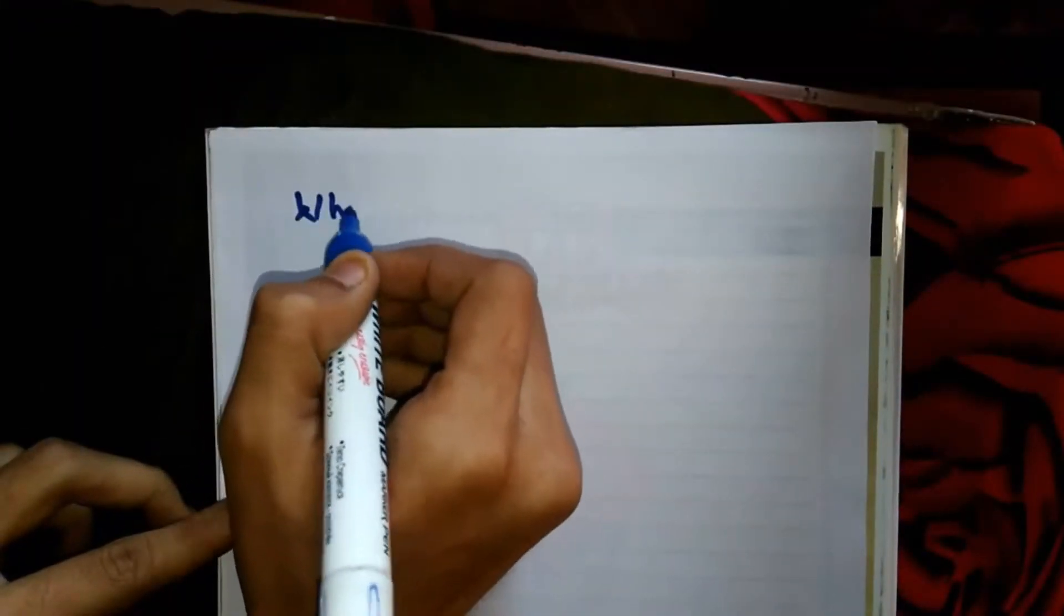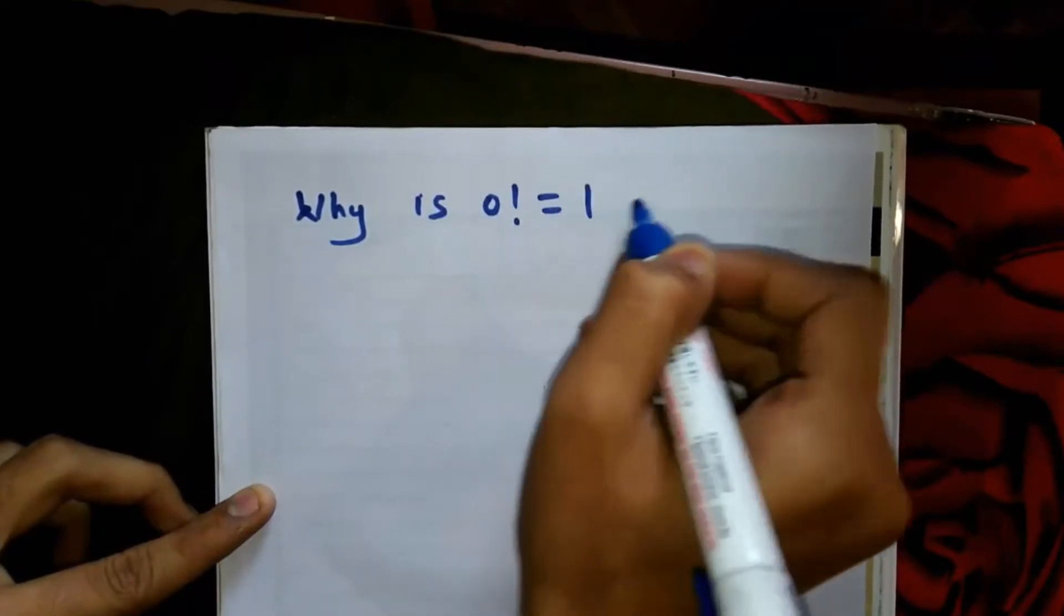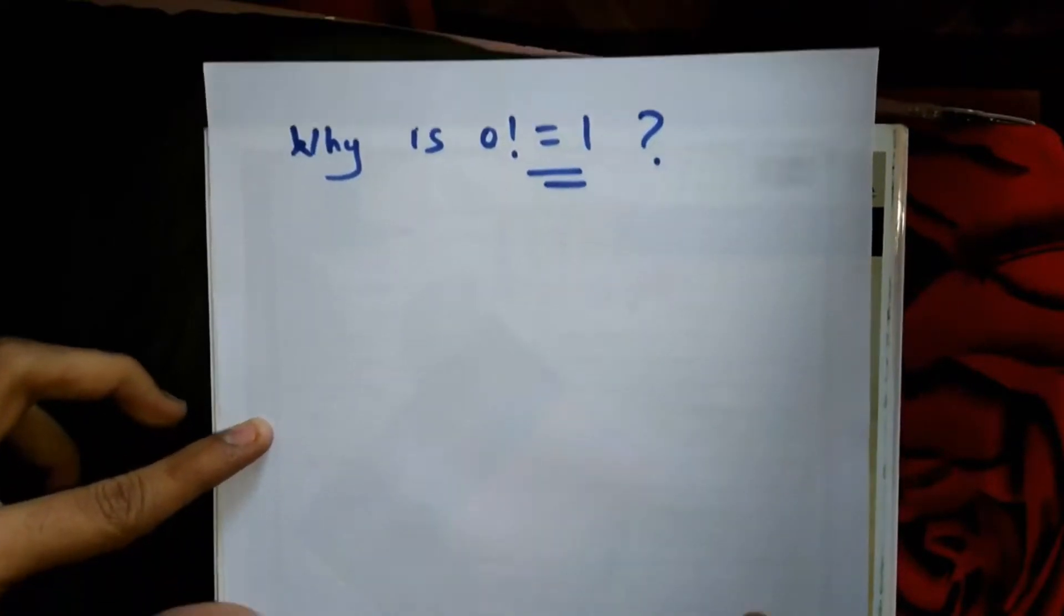Welcome to The Best Math 7. Today we are going to learn why 0 factorial equals 1.